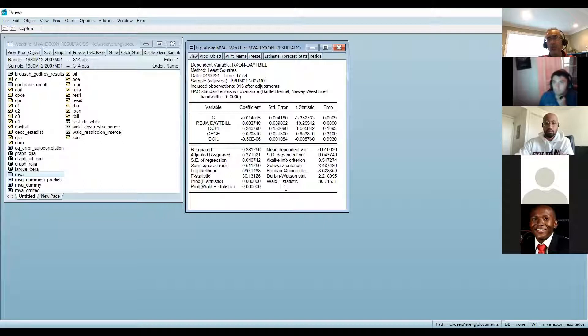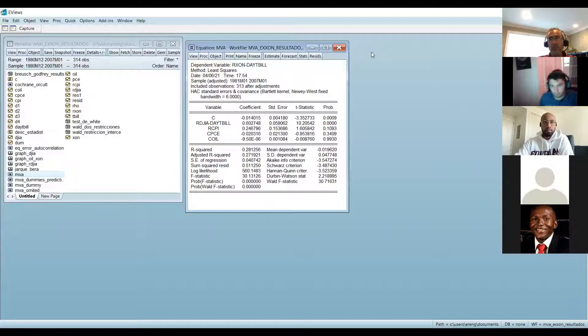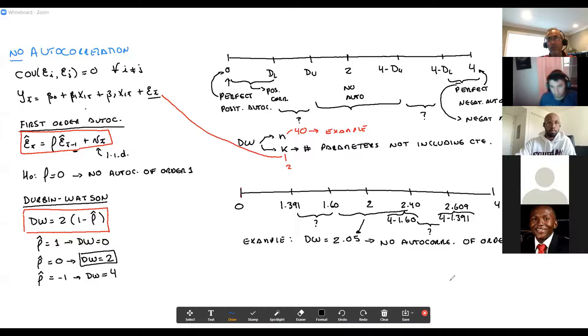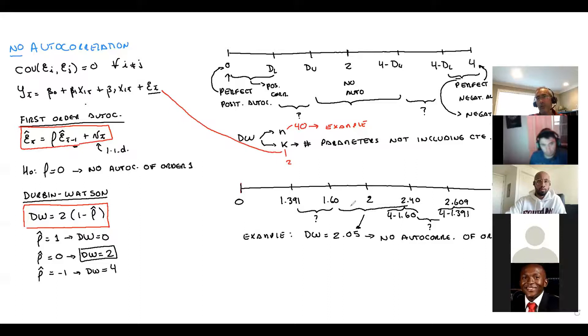With 313 observations and four regressors (k=4), we use the n=100 row of the table. The critical values are DL=1.592 and DU=1.758. A Durbin-Watson of 2.21 is very close to two, so we can argue there is no autocorrelation of order one.